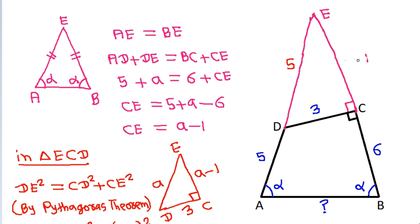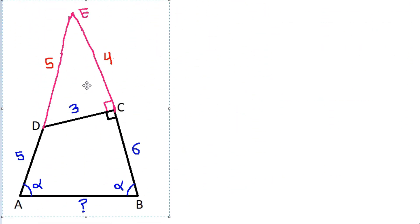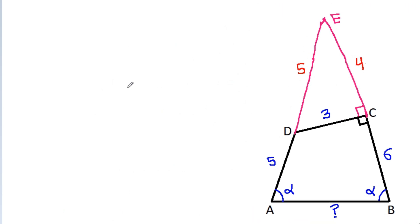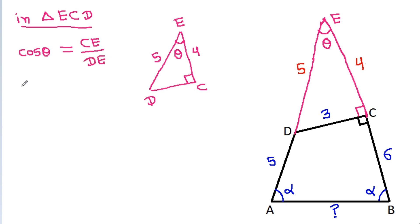So A equals 5 and CE equals A minus 1 equals 4. Now in triangle ECD, suppose angle at E is theta. CE is 4, DE is 5, and the angle at C is 90 degrees. So cos theta equals CE by DE equals 4 by 5.